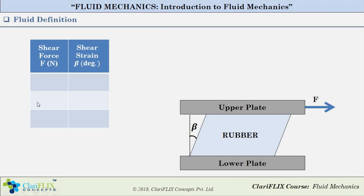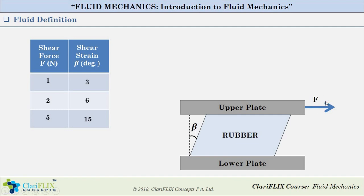Let us understand this with the help of some random numbers. Say we apply one newton of shear force; the angular deformation observed is three degrees. So one newton of shear force corresponds to three degrees of deformation. If we increase to two newtons, the angular deformation increases to six degrees. On further increase to five newtons, the deformation is fifteen degrees. Therefore, the total angular deformation of a solid body is directly proportional to the magnitude of the shear force applied.